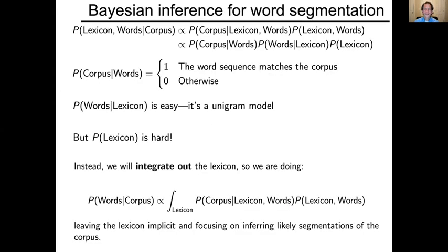Instead, we're going to turn to the approach of Bayesian inference. With Bayesian inference, we're interested in putting a posterior over lexicon and words given the corpus. The likelihood part is very easy: the probability of a corpus given a hypothesized word sequence is simply one if the word sequence matches the corpus — when you erase the boundaries in the word sequence you get the corpus — and it's zero otherwise. So the likelihood question is extremely simple. We also have no problem with the words-given-lexicon model — that's the unigram model.